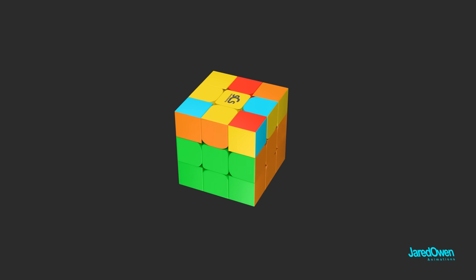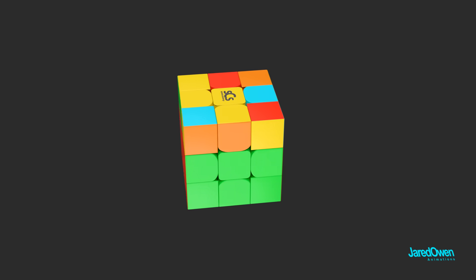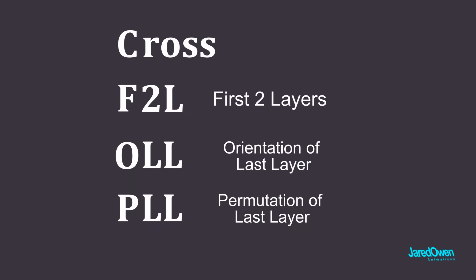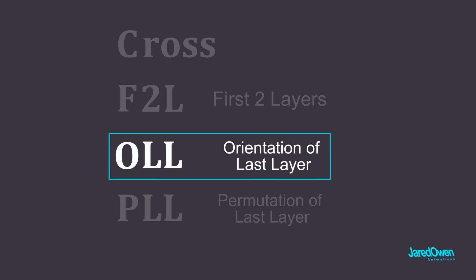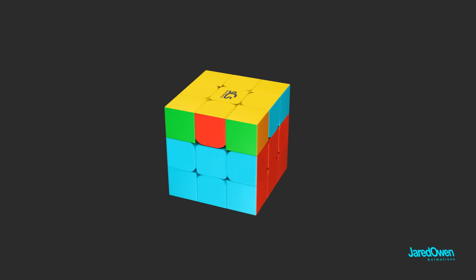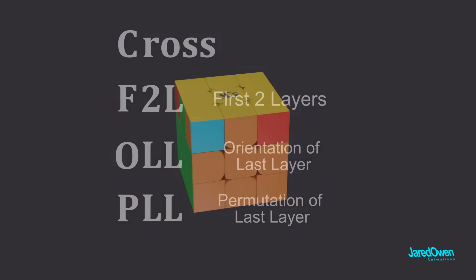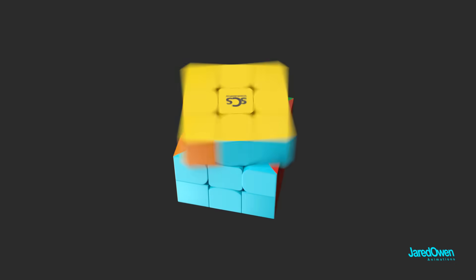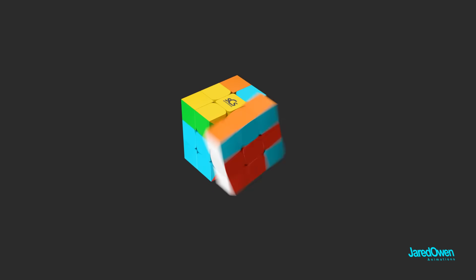This last layer is a little tricky because you have to move your pieces around without messing up what you've already done, which is a lot. There are two steps for this last layer. We start with OLL, or orientation of last layer. This lines up the colors on top while ignoring the side colors. Then finally PLL, or permutation of last layer. This uses special moves to swap these pieces around until it's completely solved.